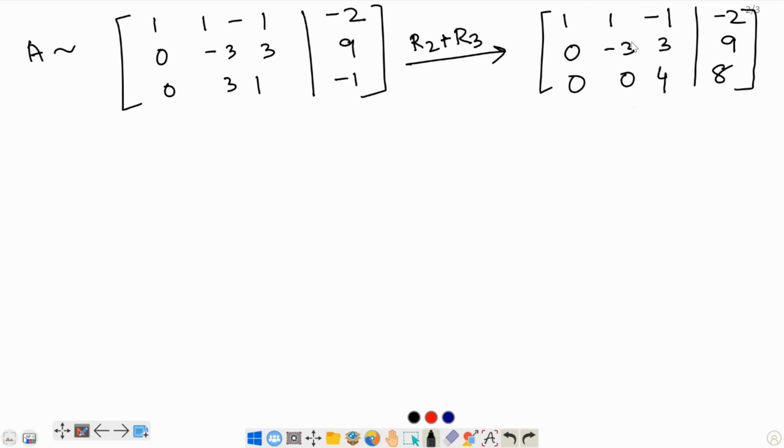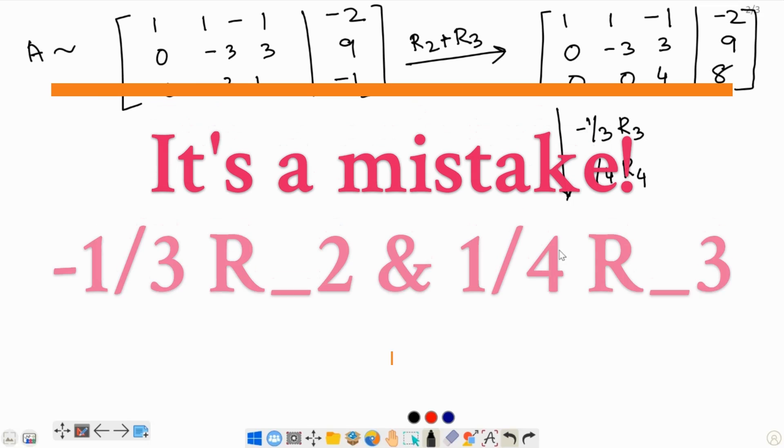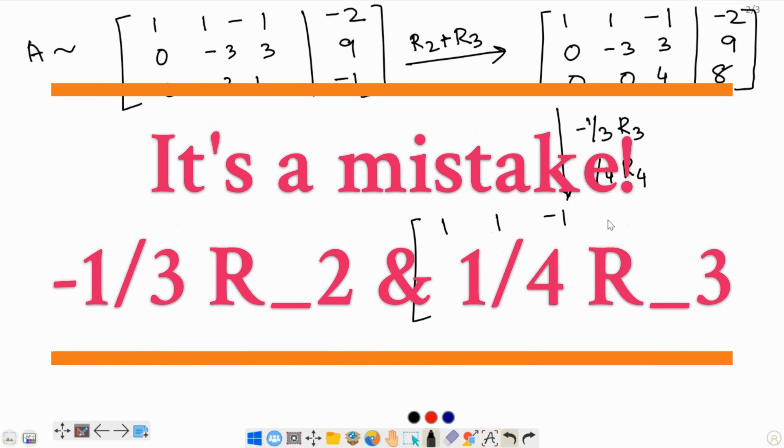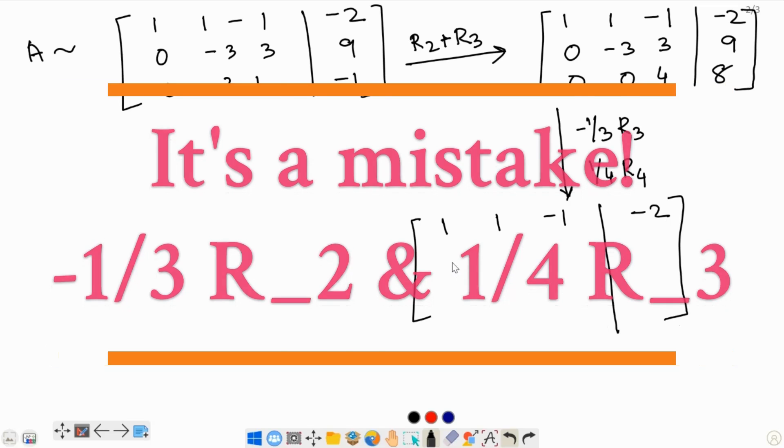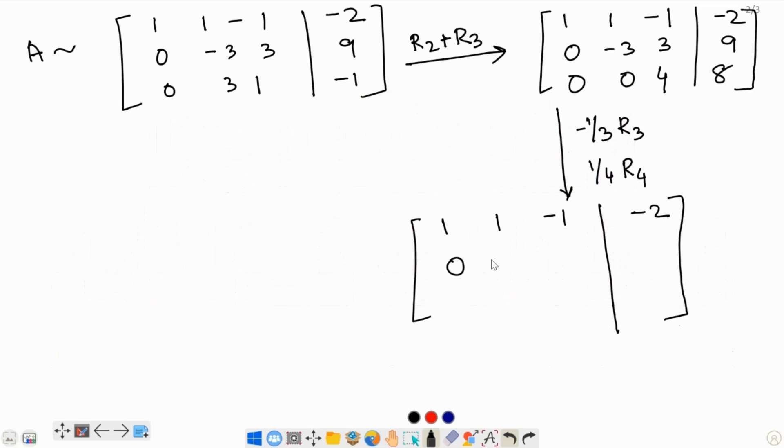But these two they need to be converted into 1. Okay. So, therefore simultaneously for row 2 I am going to multiply by negative one third row 2 and for row 3 I am going to multiply it by 1 fourth. So, row 1 will not change. So, let us rewrite that. And row 2 we are going to multiply everything by negative one third that is dividing everything by negative 3. So, negative 3 divided by negative 3 that is positive 1. 3 times negative one third is negative 1. 9 times negative one third is negative 3. Now, the third row 4 times 1 fourth is 1. 8 times 1 fourth is 2.